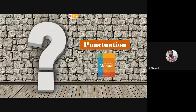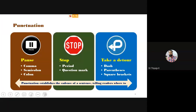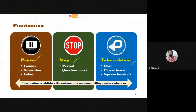The first thing I focus on is punctuation. According to the APA style manual, punctuation establishes the cadence of a sentence, telling readers where to pause, where to stop, and where to take a detour. So three ways: pausing punctuation, stop-based punctuation, and take a detour. For pausing, we use comma, semicolon, and colon. For stopping the sentence, we use a period — period is nothing but a full stop. For stopping in another way, the question mark. For take a detour, APA style suggests using dash, parentheses, and square brackets.